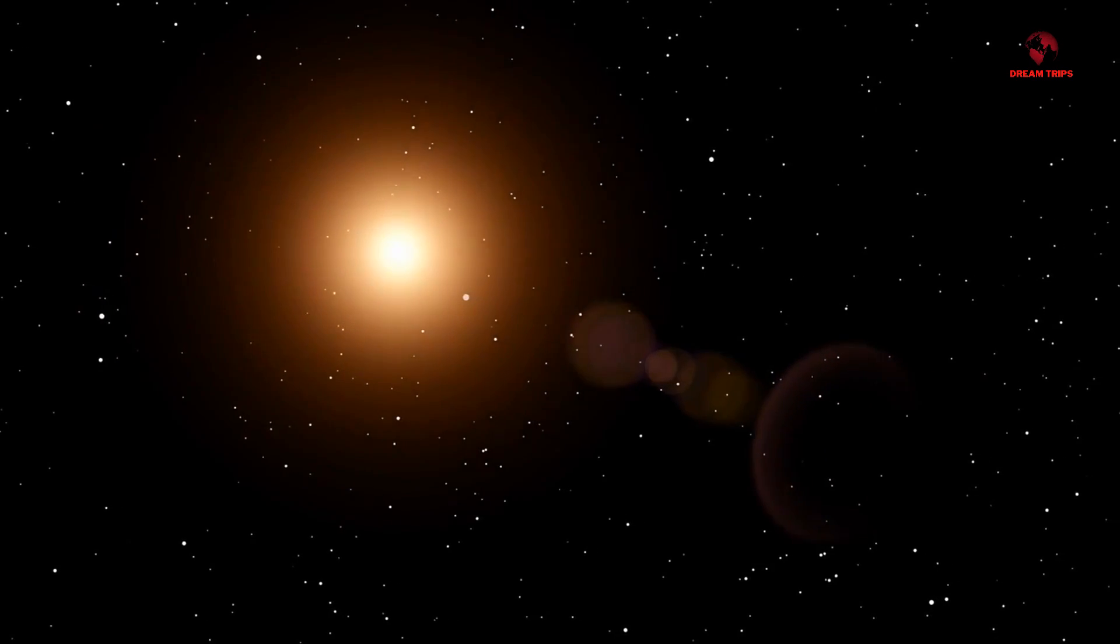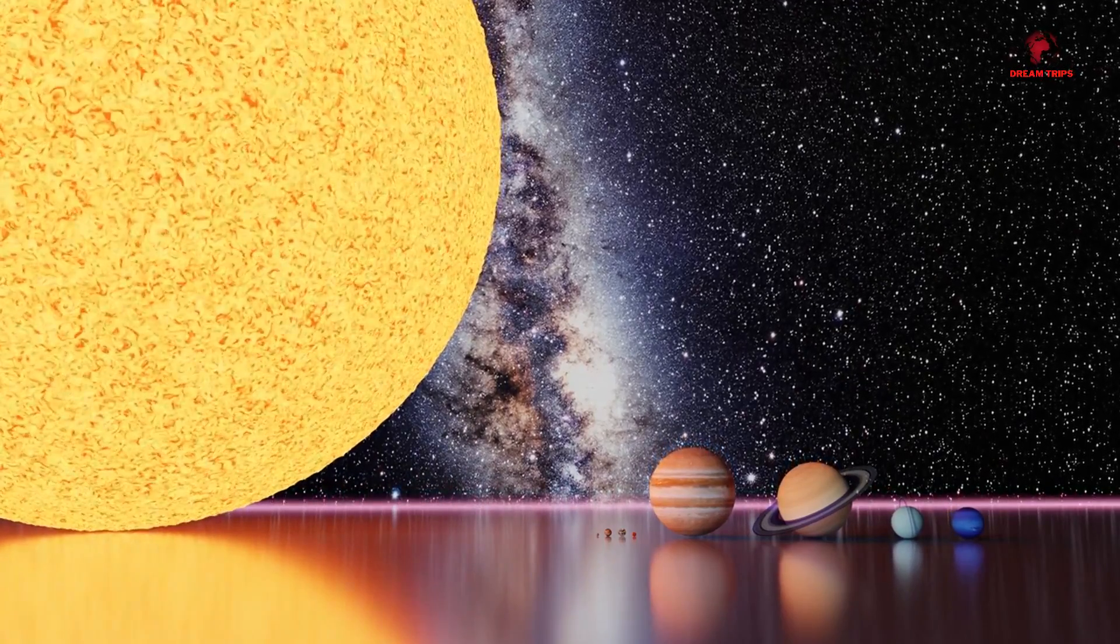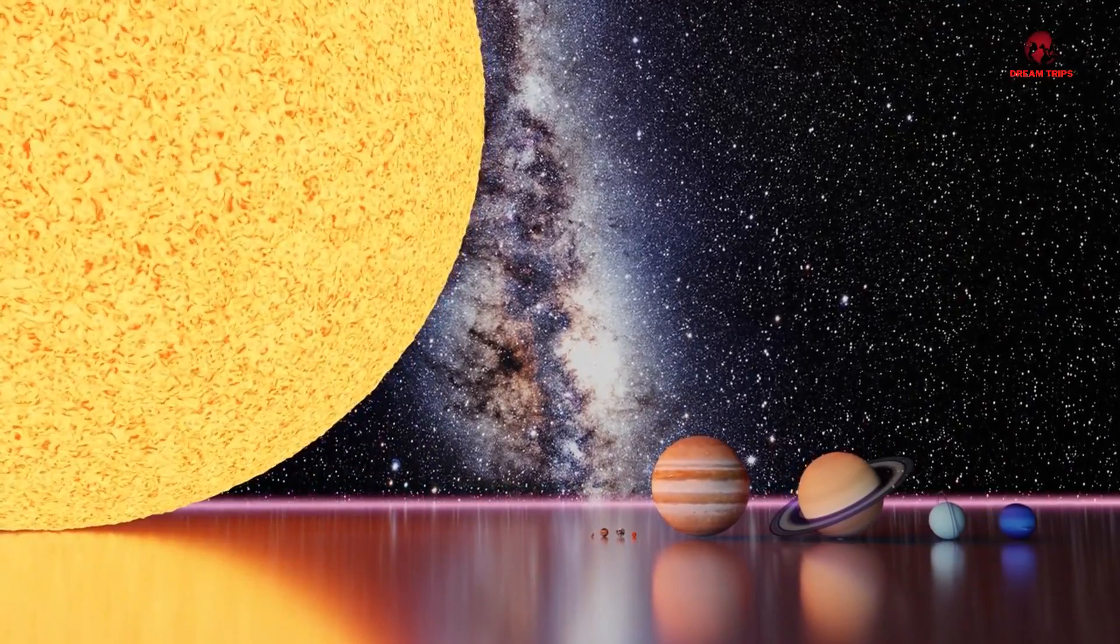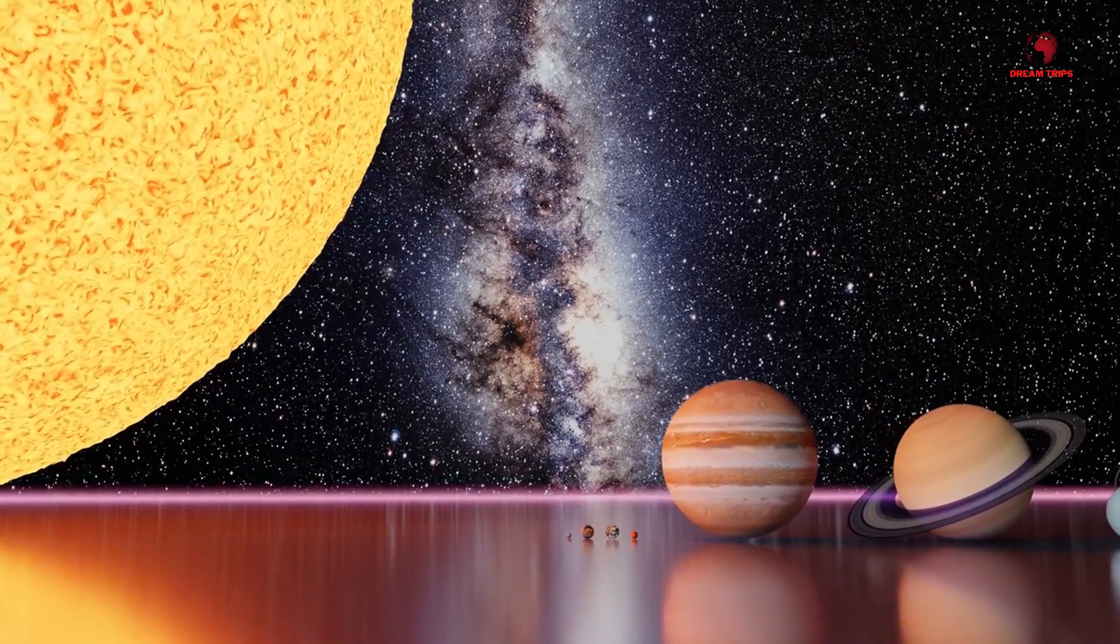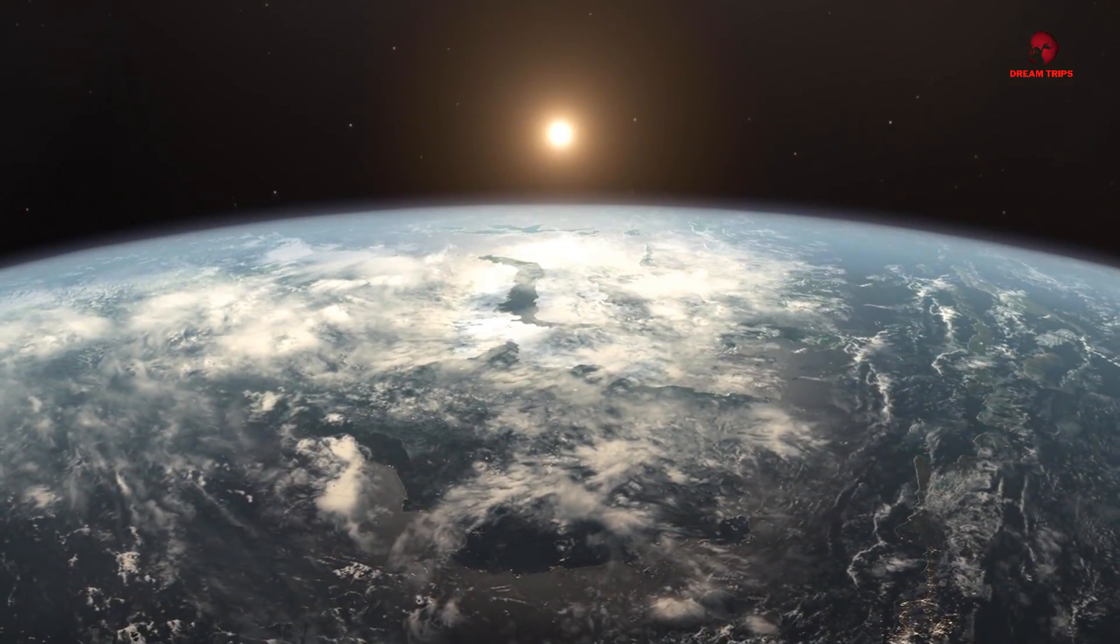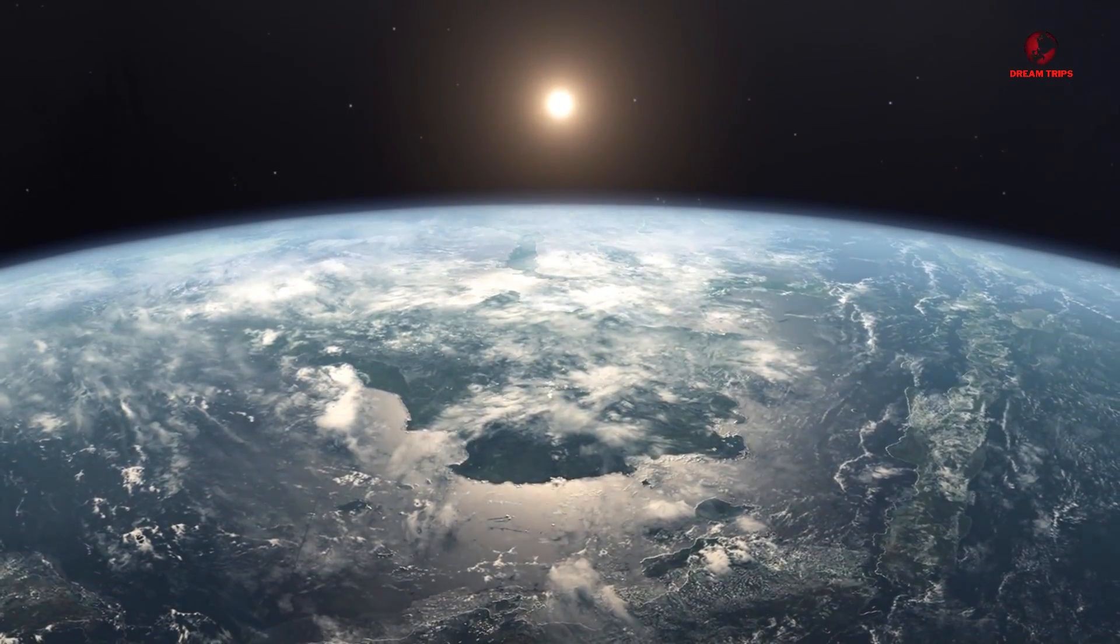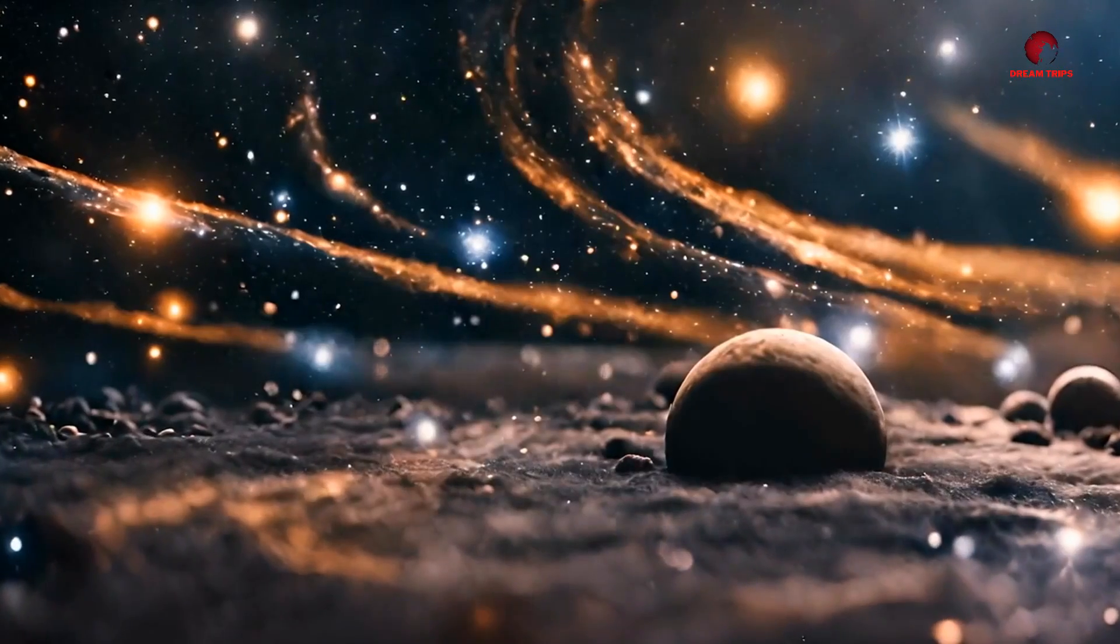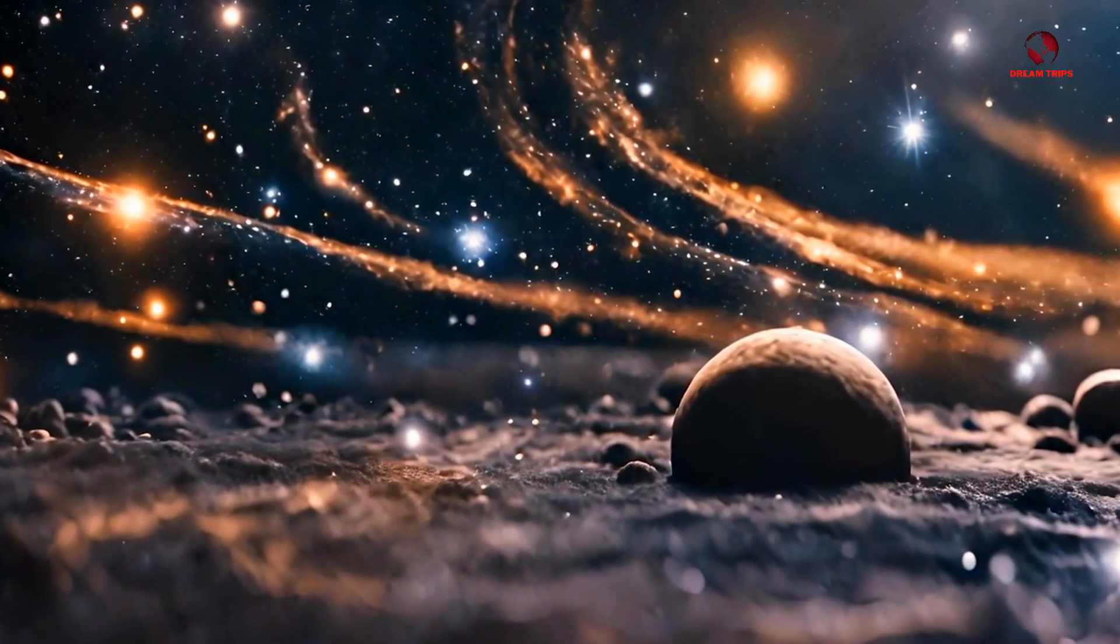The mass of UY Scuti, while significantly larger than the sun's, does not scale linearly with its size due to its less dense outer layers. Yet the mass is crucial in determining the star's fate, as it drives the star's evolution and eventual death. Stars like UY Scuti, with their massive reserves of fuel, live fast and die young, often ending their lives in spectacular supernovae, leaving behind either a neutron star or a black hole.